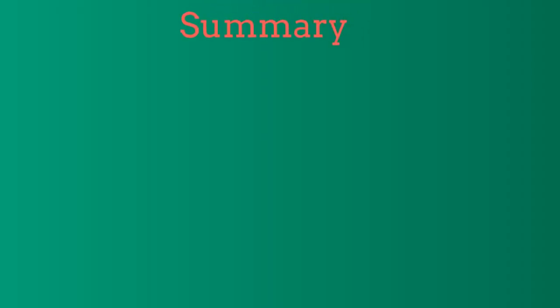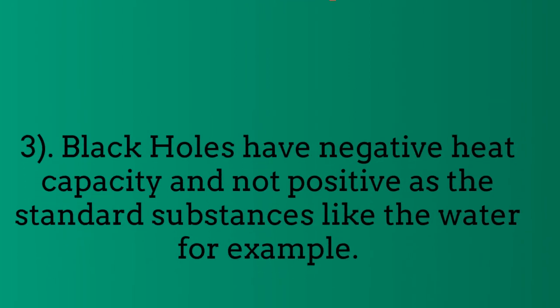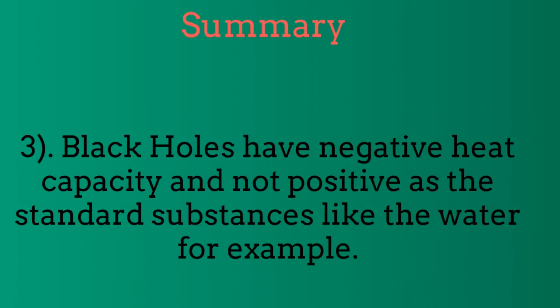In summary, black holes obey the same laws of thermodynamics as ordinary systems. However, the entropy of a black hole is proportional to the area of the event horizon and not to its volume as it is the case of ordinary systems. Finally, black holes have negative heat capacity which means that when they absorb matter they become colder and vice versa.